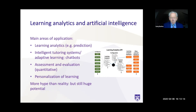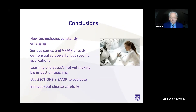It's really important that teachers and instructors keep up to date with what's happening here. In conclusion: new technologies will constantly emerge. Serious games and virtual reality have already demonstrated powerful but specific applications, but learning analytics and artificial intelligence have yet to make a big impact on teaching. With any emerging technology, you can use the SECTIONS and SAMR models to evaluate them — are they actually significantly changing the learning experience, and are they practical? Lastly, instructors should innovate, but choose carefully and make sure the applications are likely to be of value to their students.